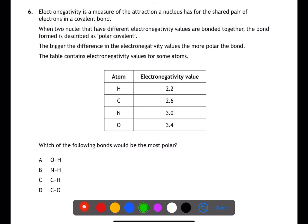This question gives you a lot of information about electronegativity. The key sentence is that the bigger the difference in electronegativity values, the more polar the bond. We need to find the two with the biggest difference in electronegativity, which is hydrogen and oxygen. Therefore, O-H would be the most polar.